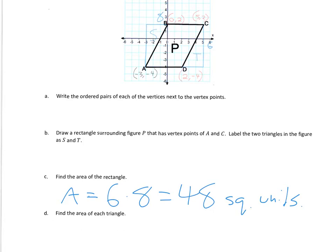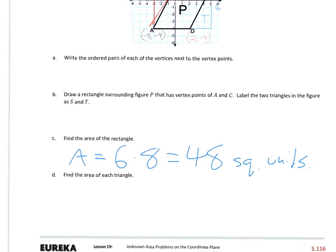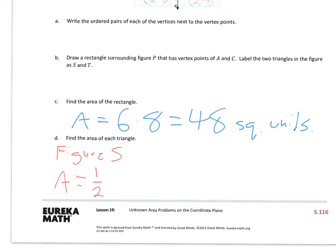Now find the area of each triangle. I'm going to do triangle S first. The triangle is 1, 2, 3 by 1, 2, 3, 4, 5, 6 — so 3 by 6. The area of figure S is one half of 3 times 6, which is one half of 18, which is 9. So the area is 9 square units.